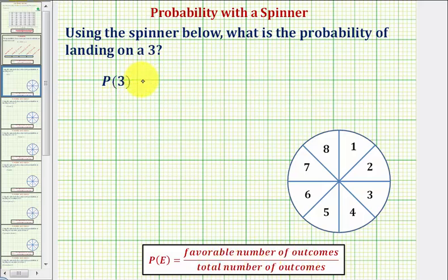So for the probability of landing on a three, let's begin by determining the total number of outcomes. Looking at the spinner, notice how each section is the same size and each section is numbered from one through eight. So there are a total of eight possible outcomes.